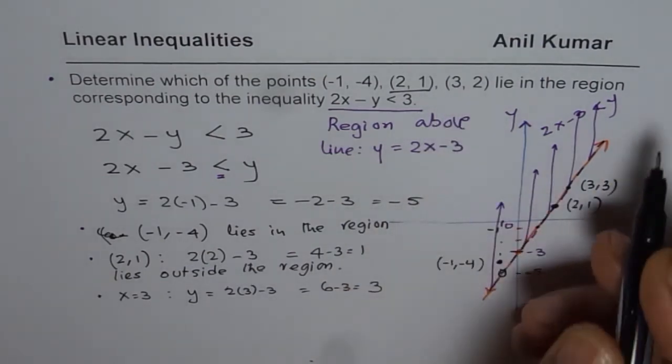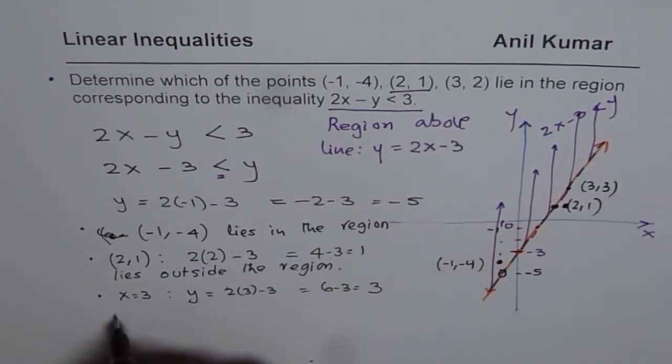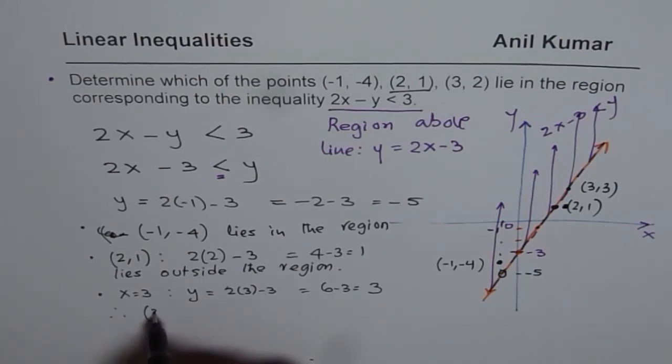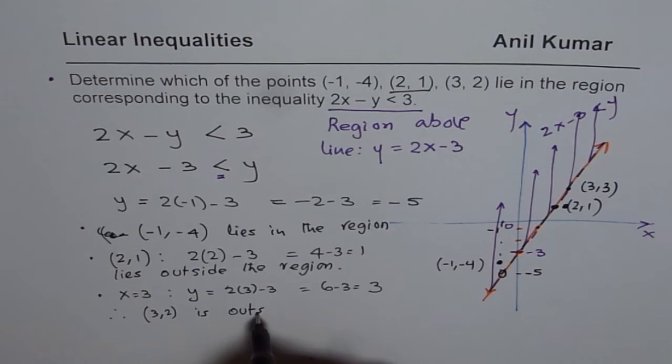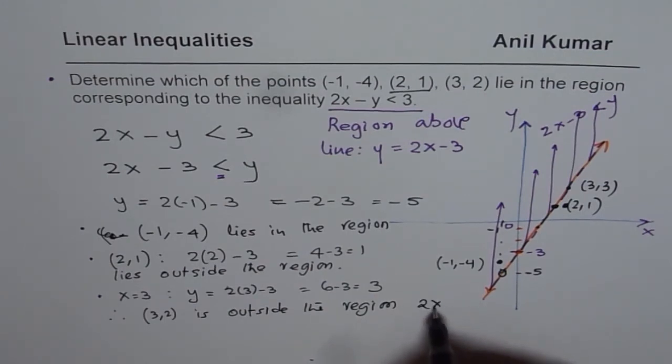Since the point is (3, 2), that means this point is outside. Therefore, the point (3, 2) is outside the region 2x - y < 3.